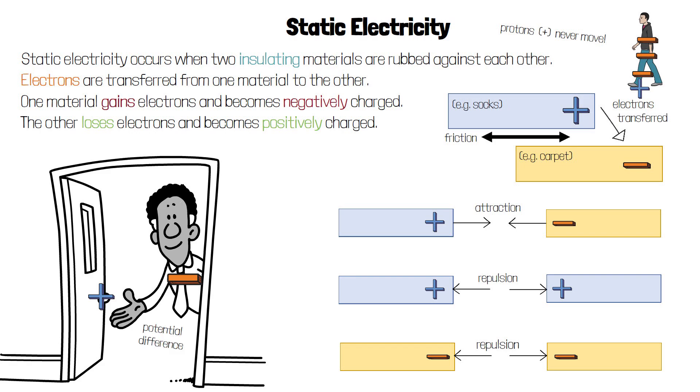This means there's a potential difference between you and the door handle. Electrons flow easily in the metal door handle because it's a conductor, so when you touch it, electrons will jump from your hand to the more positively charged door handle.